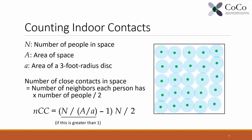Now that the computational model is working, we can count how many close contacts took place on campus. In the outdoor scenario, we measure the distance between two individual agents: if they come within 6 feet of each other for more than 10 minutes, we count that as one incident of close contact. For the indoor environment, we use a theoretical estimate based on the total number of people occupying the space, the total area of the space, and the area of a three-foot radius disk around each individual. This formula gives the estimated number of close contacts under those constraints, and we applied it to every indoor environment in the simulation.